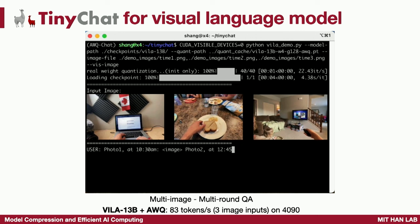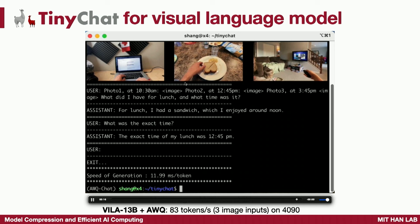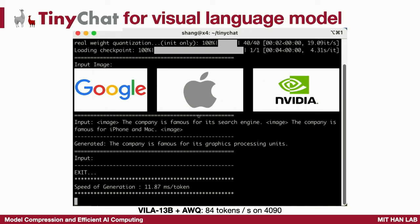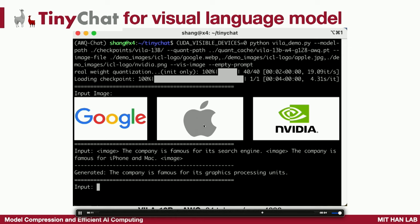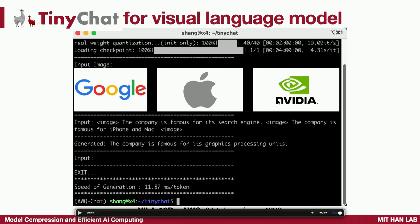We can even understand multiple images using VILA, our visual language model, running locally via TinyChat on a 4090 GPU. We give it three example images and ask what I had for lunch and what time it was — it says a sandwich at 12 p.m. since lunch is usually at noon. Similarly, we can do in-context learning without describing the task: we interleave image-text pairs — image one is famous for search engine, image two is famous for iPhone and Mac — then give a third image. Without defining the task, it automatically says it's famous for GPUs. That's the magic of in-context learning.